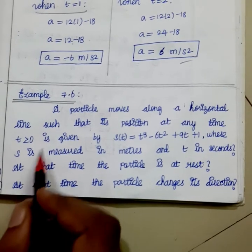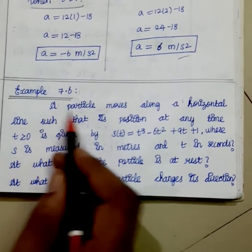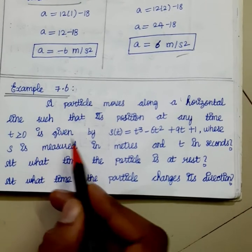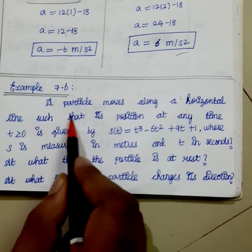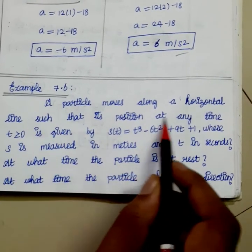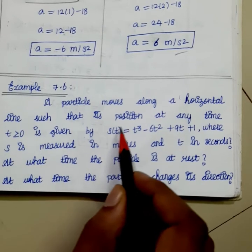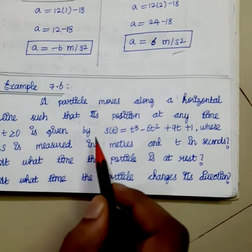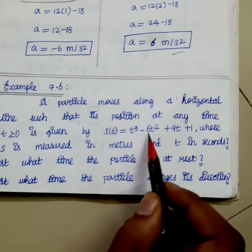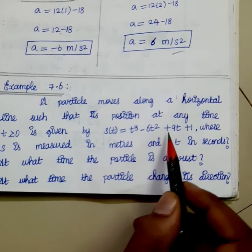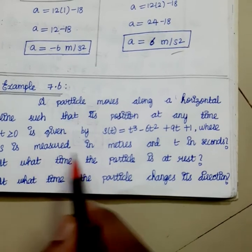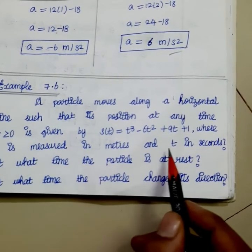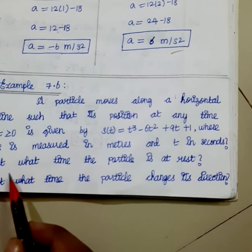Hi students. Video No. 91. Example 7.6 from the previous classes: a particle moves along a horizontal line such that its position at any time t ≥ 0 is given by s(t) = t³ - 6t² + 9t + 1, where s is measured in meters and t is measured in seconds. First subdivision: